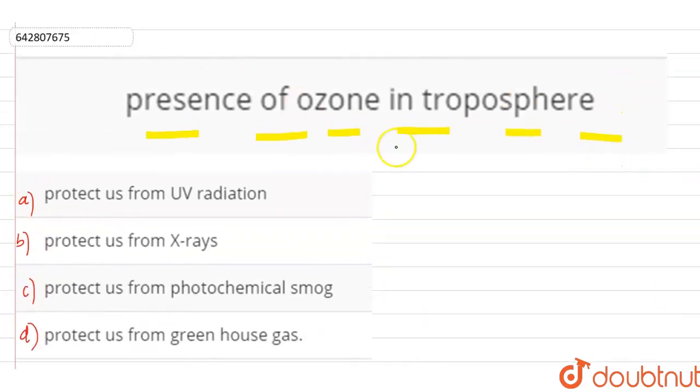So this is a very theoretical question in the exact NCERT. All of us think that the troposphere will protect us from UV radiation, but no. Our correct answer is, it protects us from the photochemical smog.